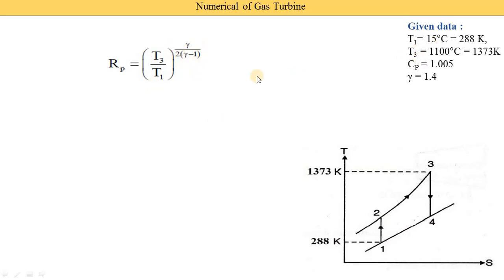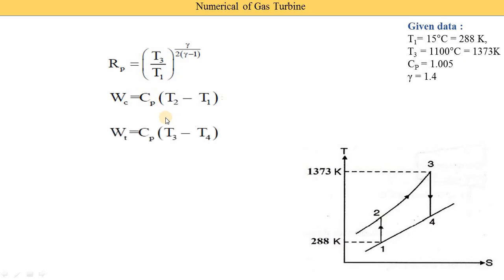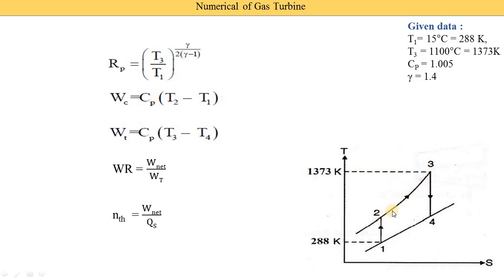Since T1, T3, and gamma are all given, we can find the pressure ratio. For compressor work, we use WC = CP × (T2 − T1), but T2 is not given, so we first calculate T2 using T2/T1 = (P2/P1)^((gamma−1)/gamma). Similarly for turbine work WT = CP × (T3 − T4), T4 is not given so we find T4 first. Work ratio = net work / turbine work, where net work = WT − WC. Plant efficiency = net work / Qs, where Qs = CP × (T3 − T2) is the heat supplied during combustion (process 2–3).